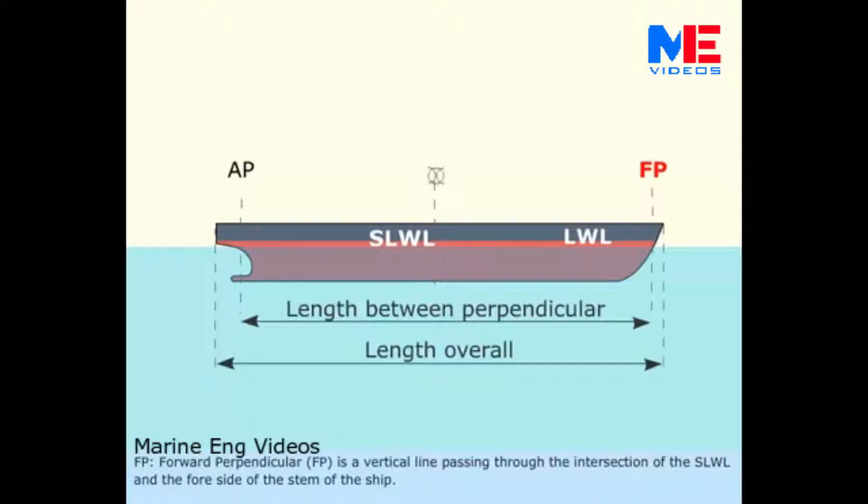FP, Forward Perpendicular. FP is a vertical line passing through the intersection of the SLWL and the fore side of the stem of the ship.